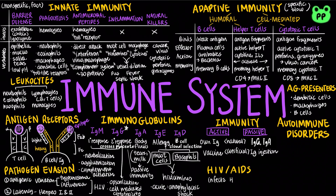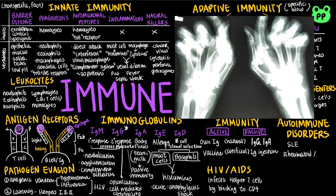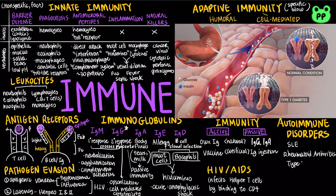HIV infects helper T cells by binding specifically to CD4, therefore inhibiting both humoral and cell-mediated immune responses, which leads to AIDS, or acquired immune deficiency syndrome. An autoimmune disease is a condition in which the immune system mistakenly attacks the body. Systemic lupus erythematosus (SLE) damages joints, skin, kidneys, heart, lungs, and other parts of the body. Rheumatoid arthritis leads to damage and painful inflammation of cartilage and bone of joints. In type 1 diabetes, cytotoxic T cells target insulin-producing beta cells, leading to decreased insulin production.